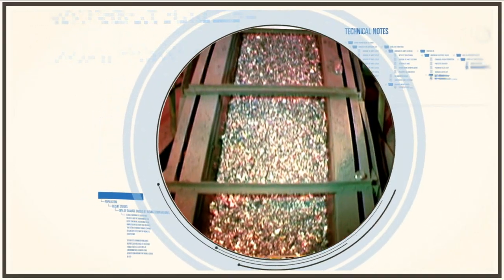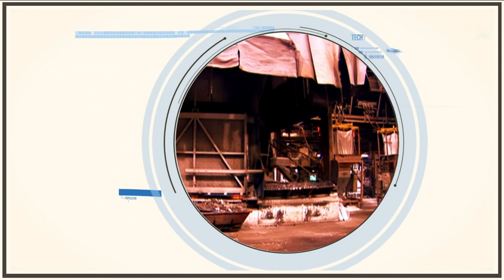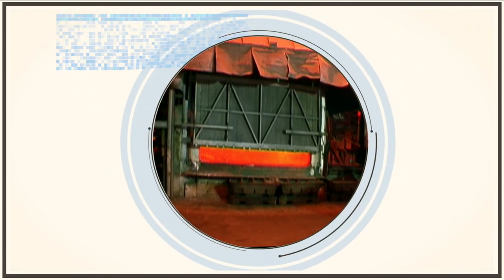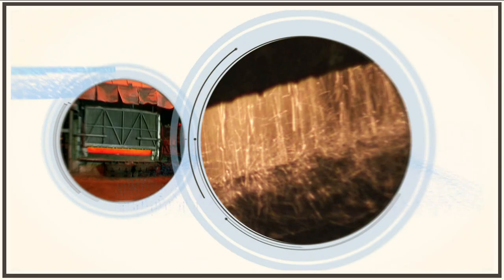Where they're washed, shredded and remelted at 750 degrees centigrade. The molten aluminium is poured into moulds and cooled to form ingots.